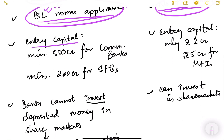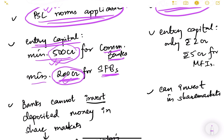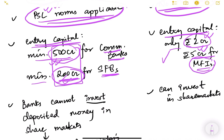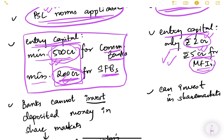The entry capital required to establish a bank is a minimum of 500 crore rupees for commercial banks and 200 crore rupees for small finance banks. In contrast, to establish an NBFC you only need a net owned fund of at least 2 crore rupees, or 5 crore rupees for microfinance institutions. So compared to 500 or 200 crore, 2 to 5 crore is very small, making it much easier to establish an NBFC than a bank.